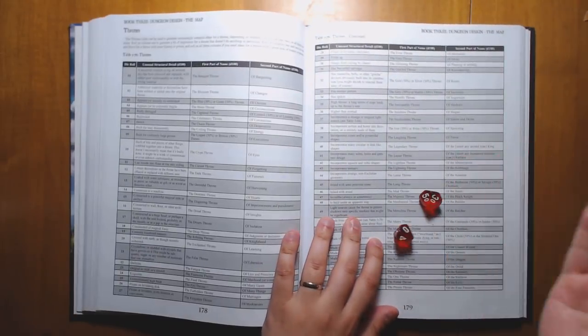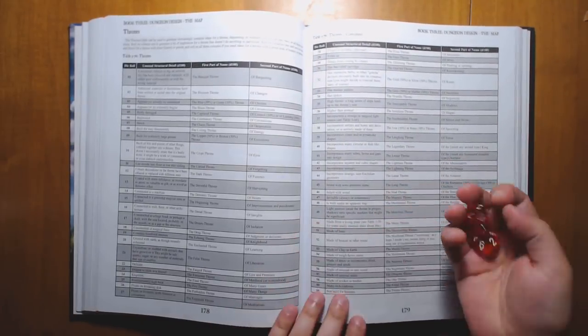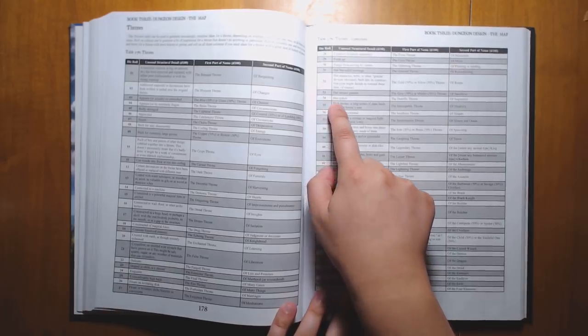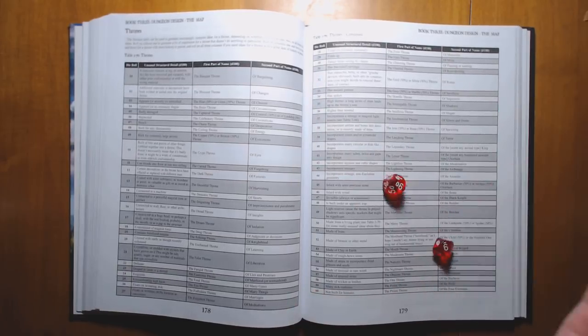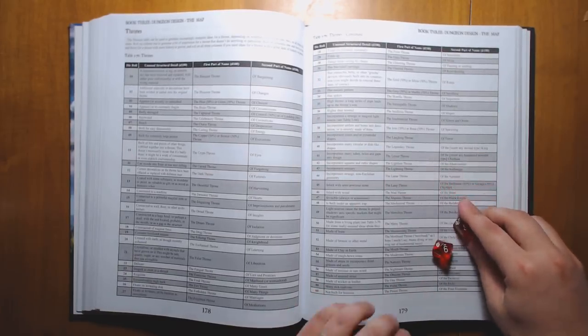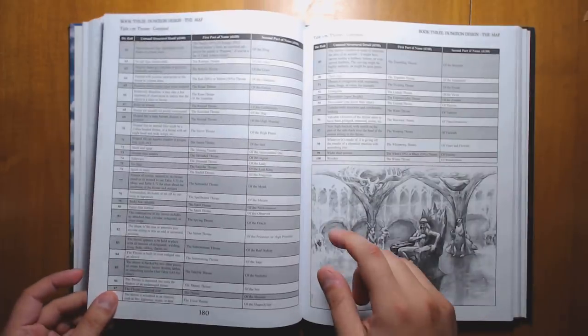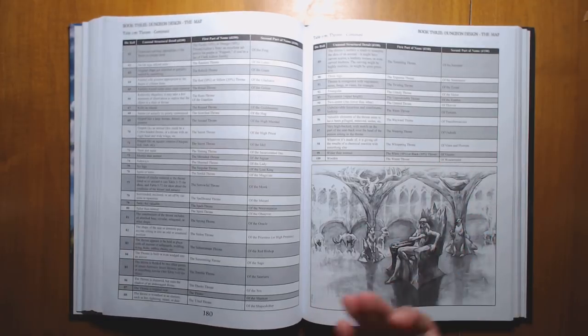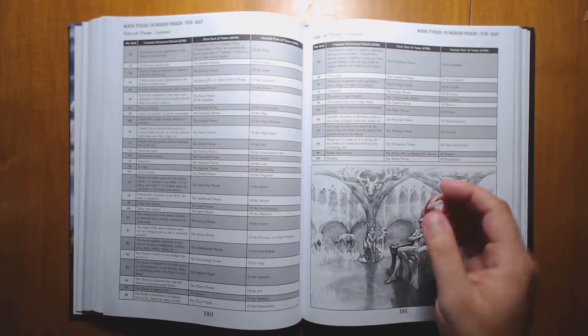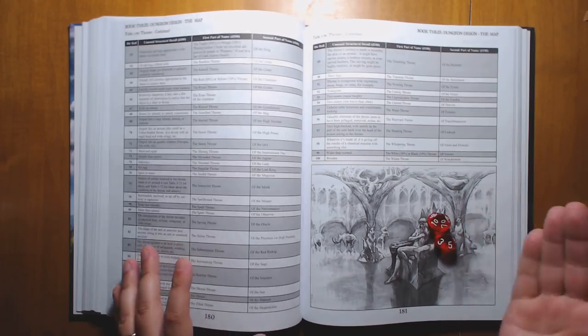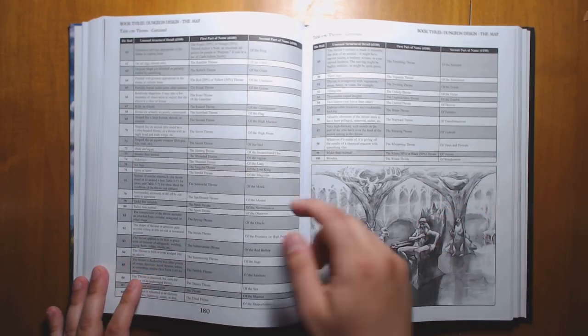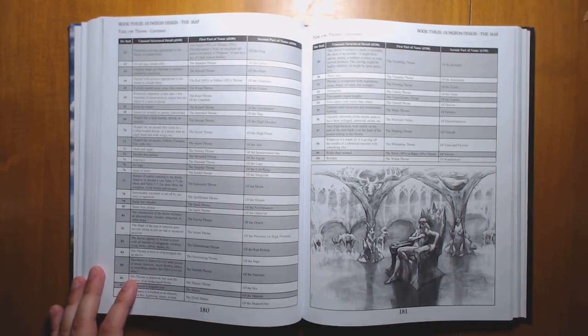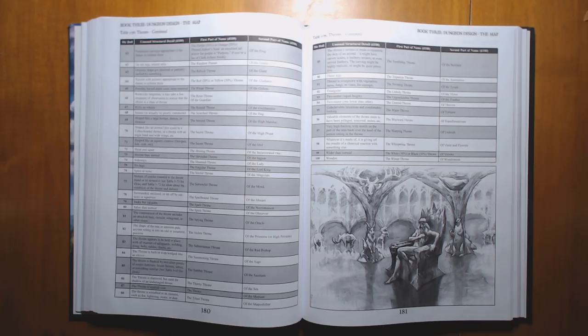We got 34, so that is, it has spikes. Maybe it's like the Iron Throne from Game of Thrones. 99, it's the white or black throne. It's the white throne of the lost king, covered in spikes. There you go.